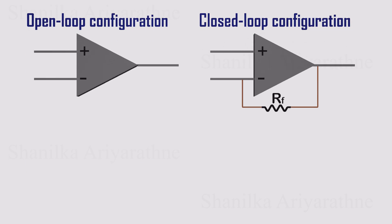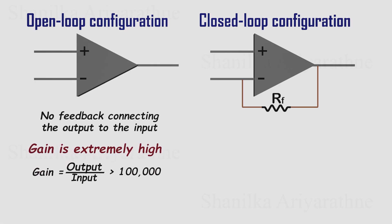Op-amps are usually used in one of two ways: open-loop or closed-loop. In open-loop mode, there's no feedback from the output back to the input. The gain here is enormous, anywhere from 100,000 to over a million. That's why open-loop is mainly used in voltage comparators, where the only job is to detect which input is higher. For more on that, check out our comparator video. The link's in the description.